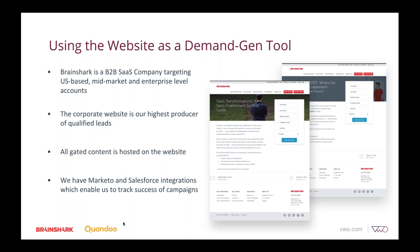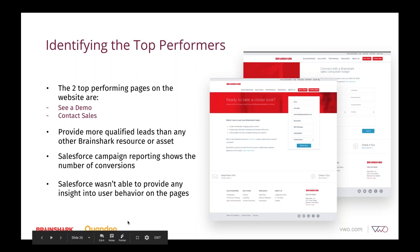What we've noticed is that we have two top-performing pages on the site that far surpass anything else in the Brainshark ecosystem. One of those top-performing pages is our 'See a Demo' page and the other is 'Contact Sales.' Essentially it's the same concept: a user lands on these pages and fills out a Marketo form. These two pages provide more qualified leads than anything else. We know these users are likely to convert at some point and eventually become customers, as our Salesforce campaign reporting showed us. However, Salesforce wasn't able to provide any additional user insight on their behavior on these particular pages.